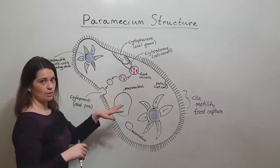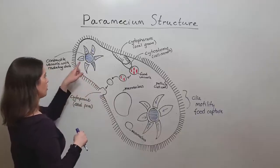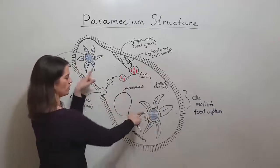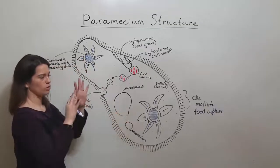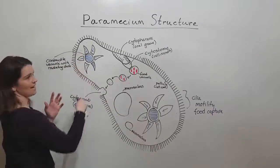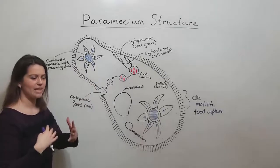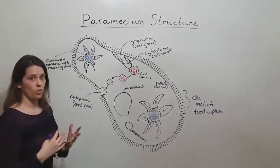A few other things to keep in mind with paramecium structure are the two contractile vacuoles. They're shown here in blue. So you have these two contractile vacuoles. They're surrounded by this array of radiating ducts, which basically act to collect the water.